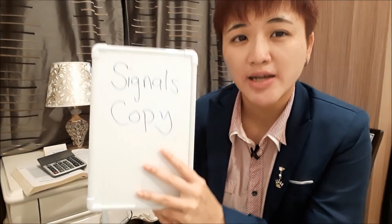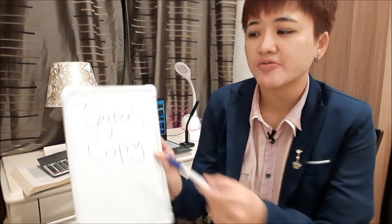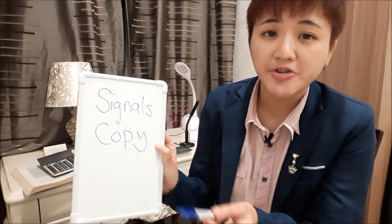With copy trading, once you decide to copy a trader, whenever they press buy or sell, everything is executed automatically in your account. The downside is that if the person you're copying enters a trade you don't like, your trade still gets executed automatically. There are pros and cons to both signals and copy trading — let me know in the comments if you'd like a dedicated video on those.